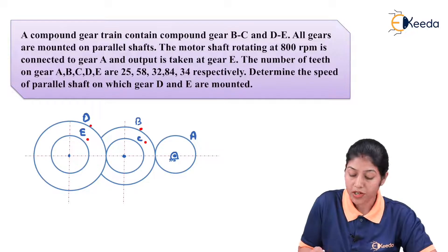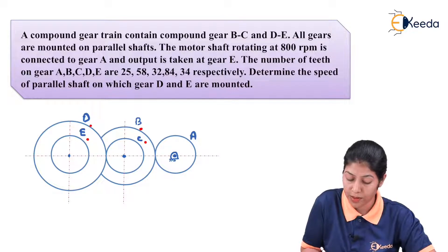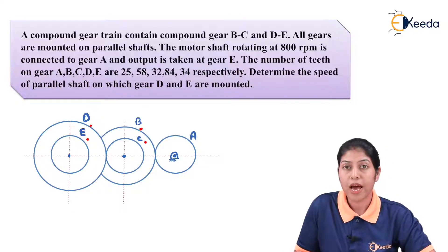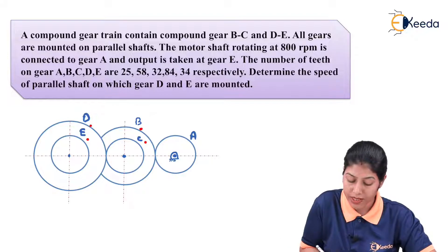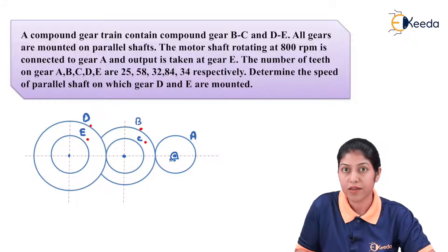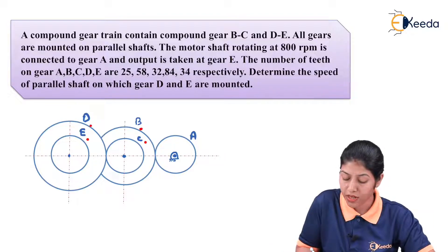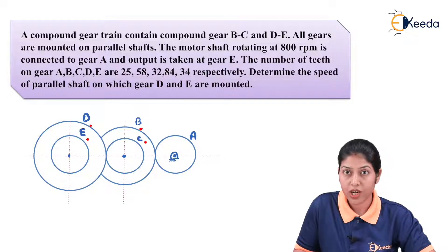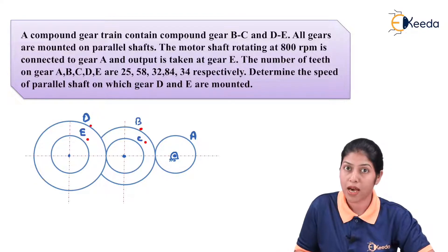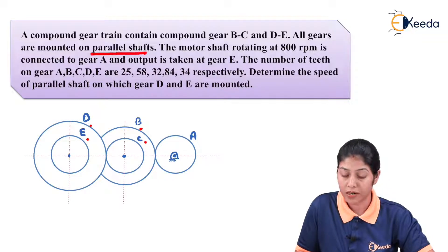A compound gear train contains compound gears BC and DE. We have two compound gears BC and DE in this diagram. All gears are mounted on parallel shafts. In a compound gear, two gears are mounted on the same shaft, so gear B and C are mounted on the same shaft and gear D and E are mounted on the same shaft. Gear A is the driving gear, also mounted on one shaft. All shafts are arranged parallelly.